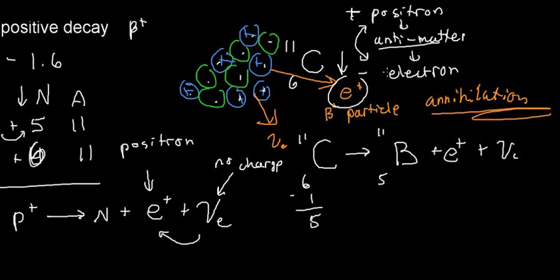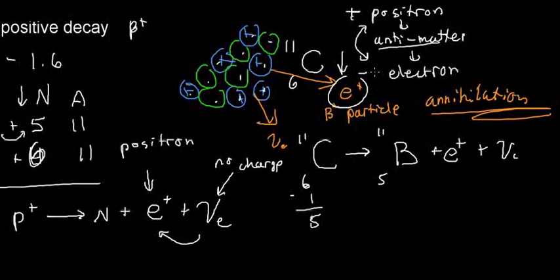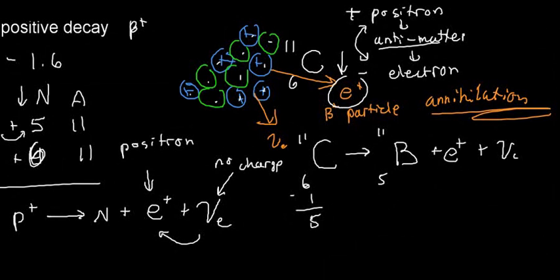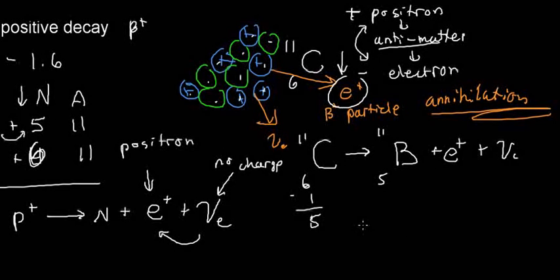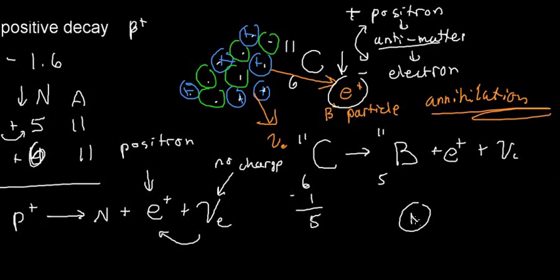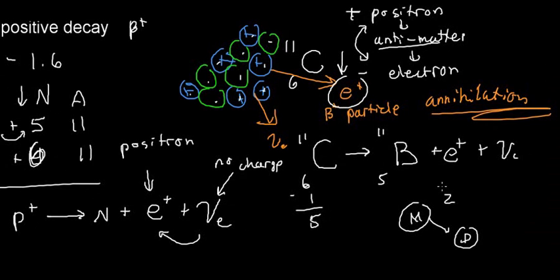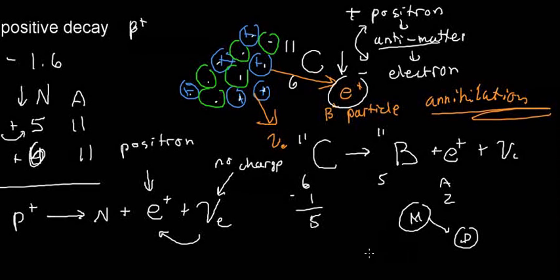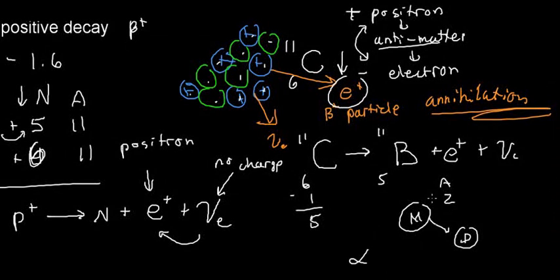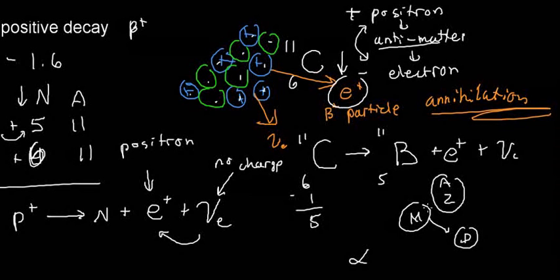This video covered positive and negative beta decay — how they affect the transition from the mother nucleus to the daughter nucleus, how they affect the atomic number Z, and how they affect the mass number A. We also discussed how alpha particles affect those elements.